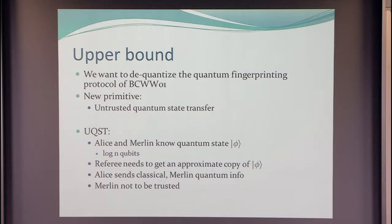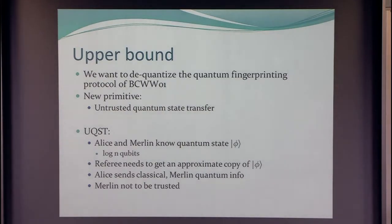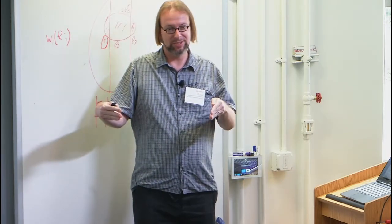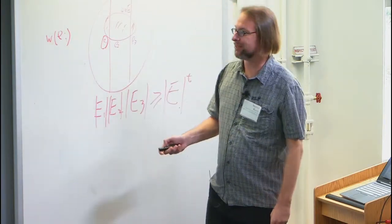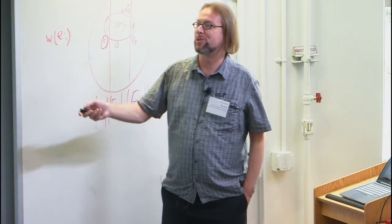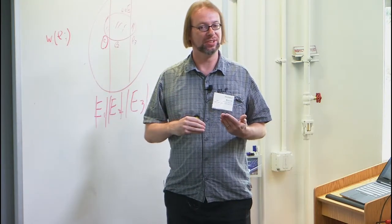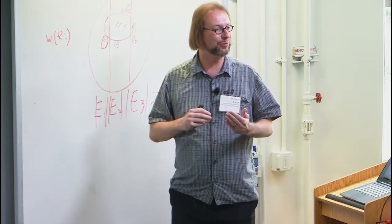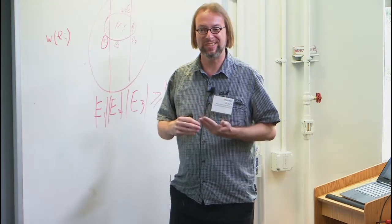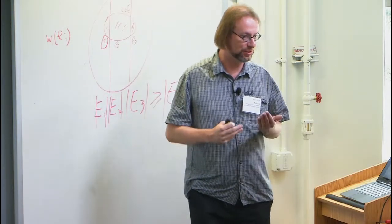The catch is that Alice is honest and knows the quantum state, but she can only send classical information. Merlin, the dishonest guy, can send quantum information. The task is for the referee to learn a copy. This is useful because in the quantum fingerprinting protocol, Alice and Bob send a pure state to the referee; we want Merlin — who can compute the fingerprint — and Alice to cooperate to give the referee a copy of the quantum state. I'm presenting this under the assumption that Alice and the referee share a public coin, which can be removed with the Newman technique.